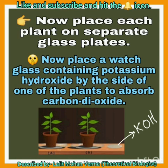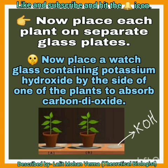Now, place each plant on separate glass plates. Take the plants from the dark room and place them on separate glass plates. Then place a watch glass containing potassium hydroxide by the side of one of the plants. Why? To absorb carbon dioxide — KOH absorbs the carbon dioxide from the surrounding.